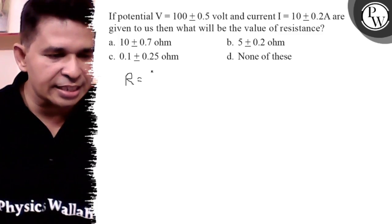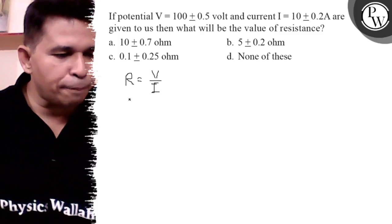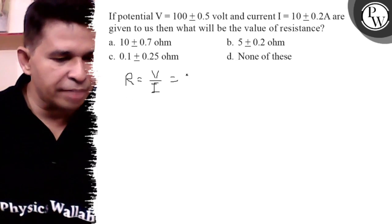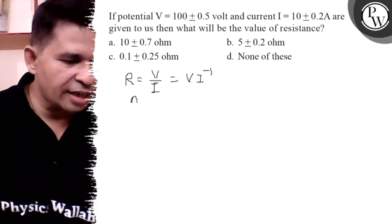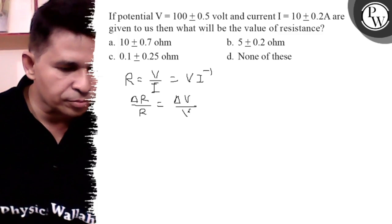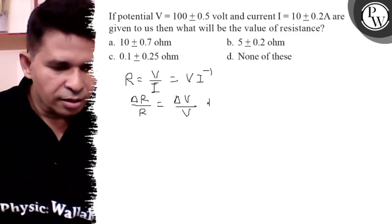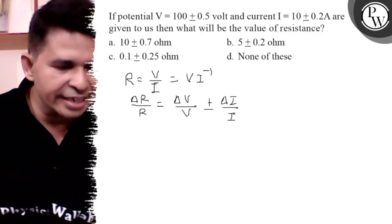We know that resistance is voltage upon current from Ohm's law. So what is delta R upon R? It can be written as ΔR/R. After differentiation, ΔR/R = ΔV/V ± ΔI/I. In error it is always additive.